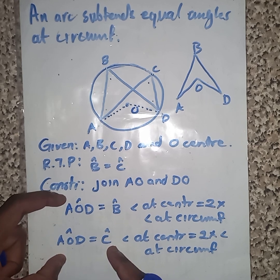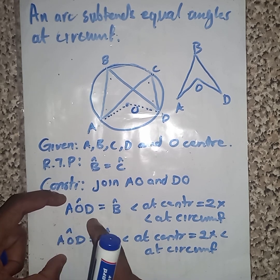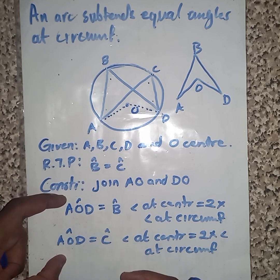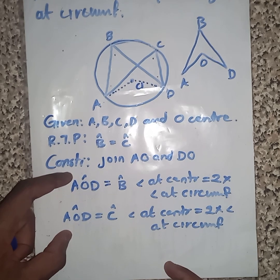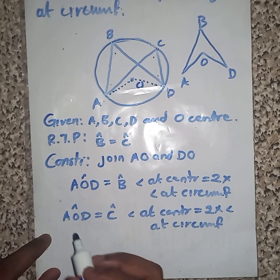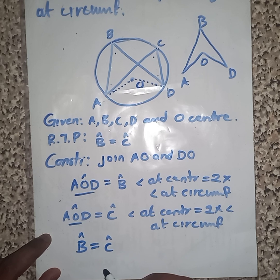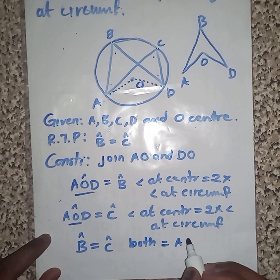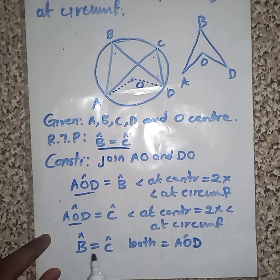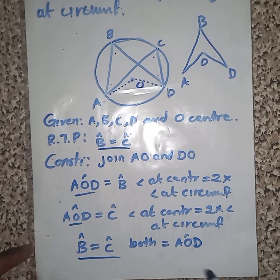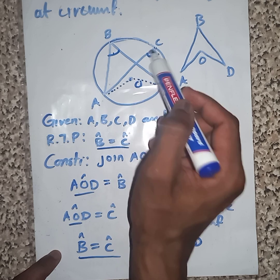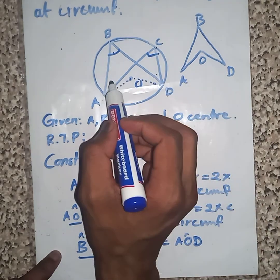And B and C both are equal to AOD. Then we can equate both of them. Let us equate B together with angle C, because both are equal to AOD. Then we are proving that these two angles are equal.